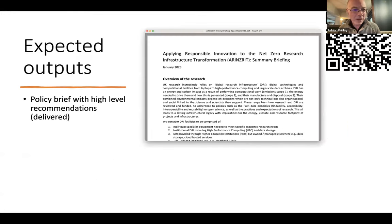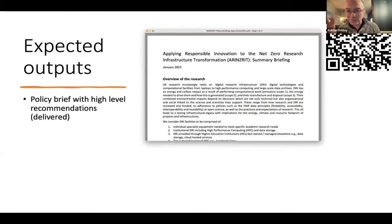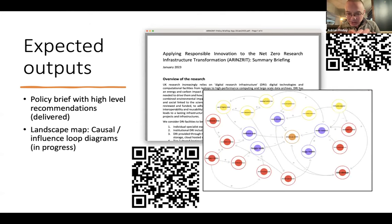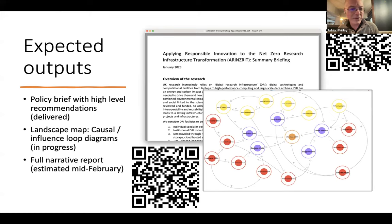What did we promise to deliver? We produced a short policy briefing — a four-pager that is essentially this presentation in slightly fuller form, accessible via QR code to a Dropbox link at the moment. We also really wanted a mapping of what informs what, what drives the growth. There's a QR code that takes you to one of our work-in-progress loopy diagrams. It's trying to set out the influencing factors and head towards where you might seek to influence. A full report is coming as well.